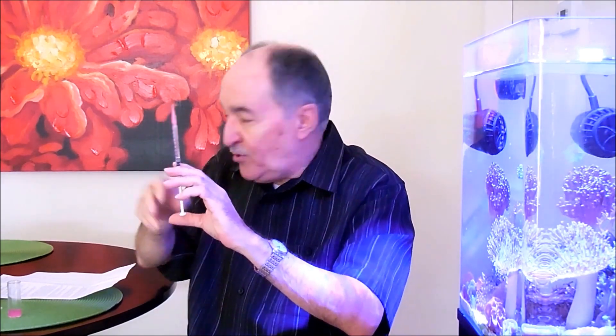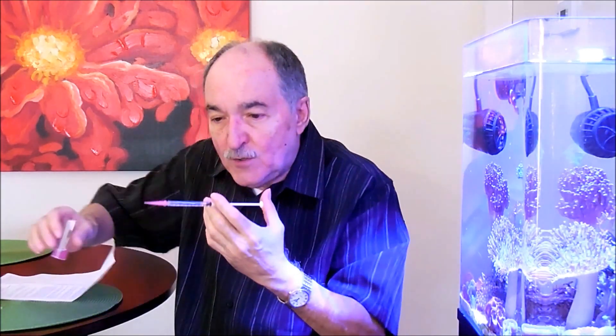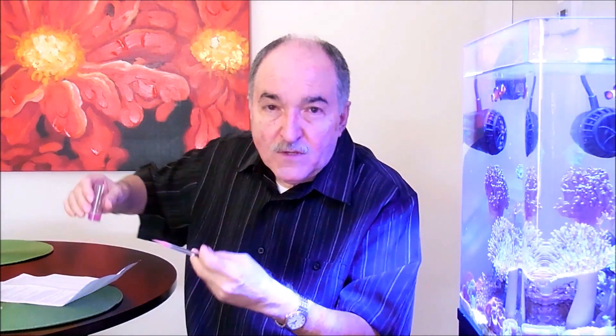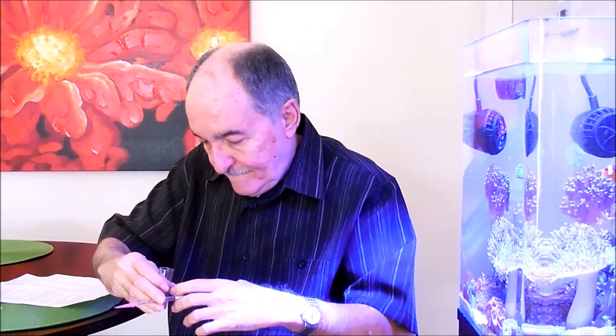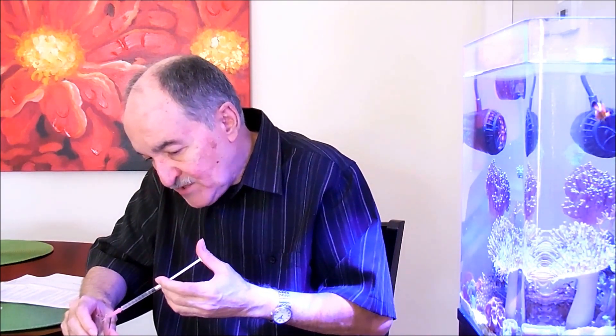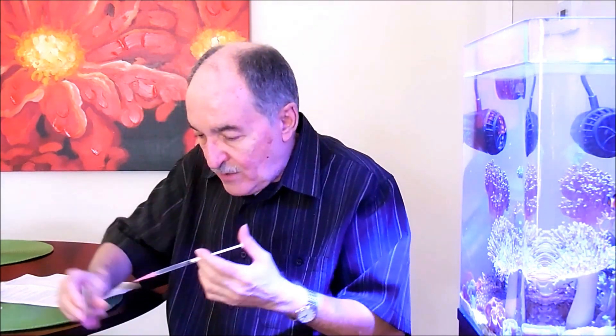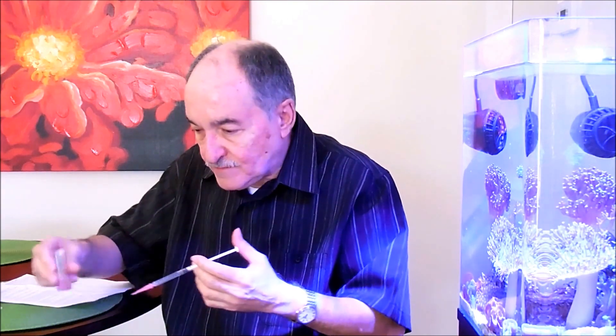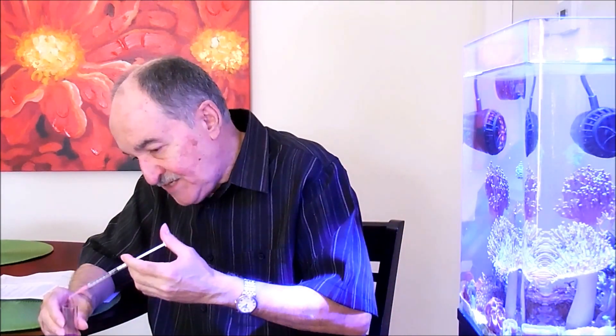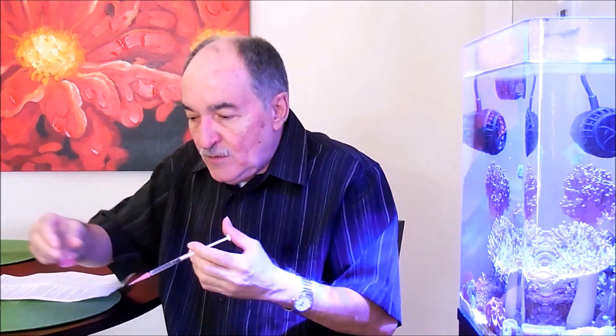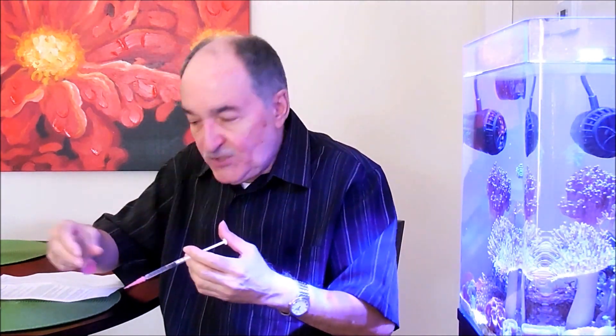Now what you're supposed to do is start to apply the liquid into this vial. What I do is I usually put like half of it because I already know more or less what the amount is going to be, and you swirl. You keep swirling until it turns like a bluish color.